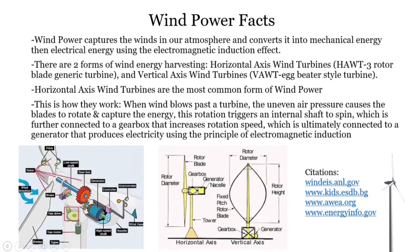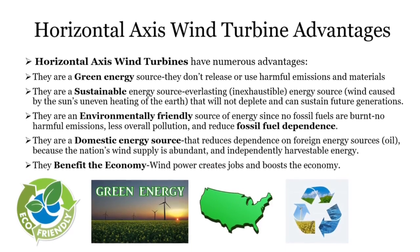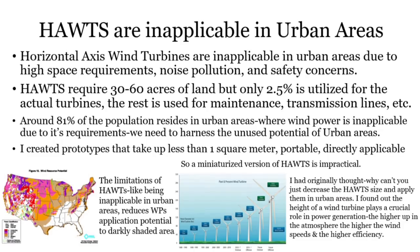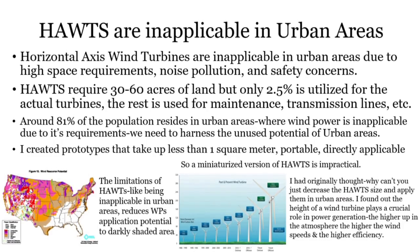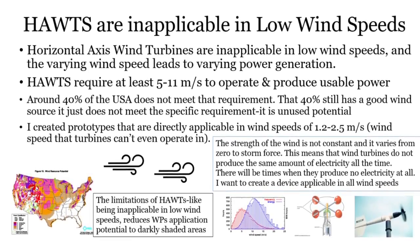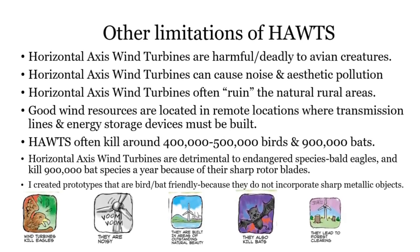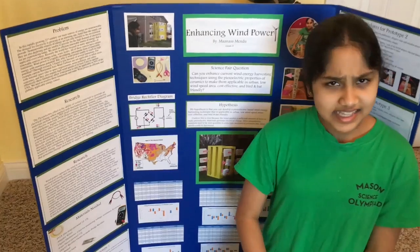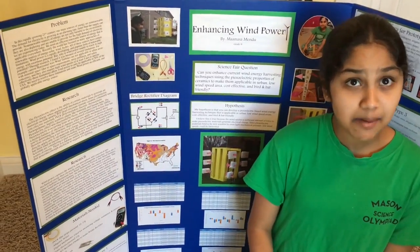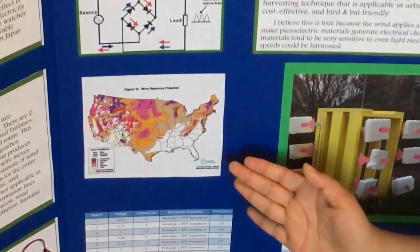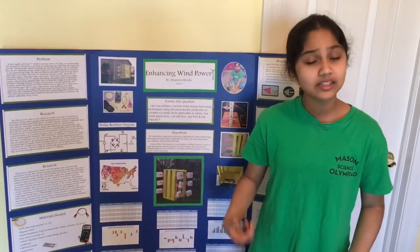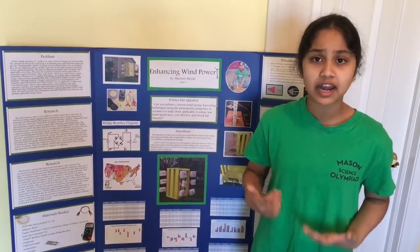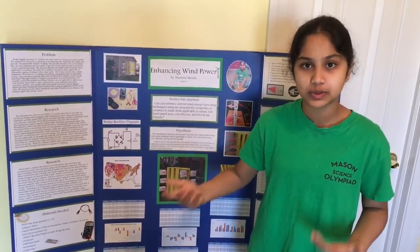Wind power is unable to reach its full potential due to several limitations. For example, horizontal axis wind turbines are inapplicable in urban areas due to high space requirements, safety concerns, and noise pollution, and they require high wind speeds of 5 meters per second to even operate. These limitations reduce wind power's application potential to 50% of the United States. We need to resolve these limitations to make wind power an efficient and globally applicable energy source.